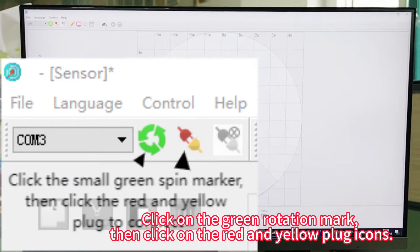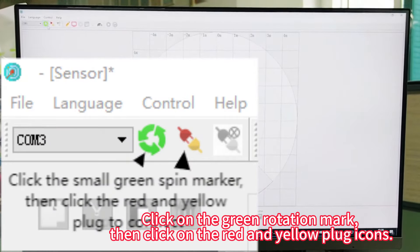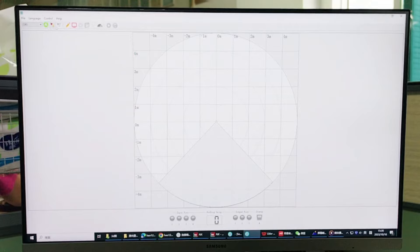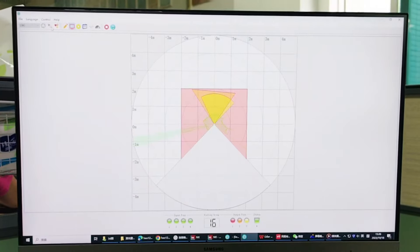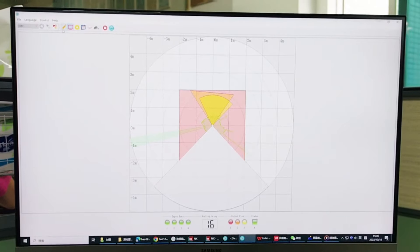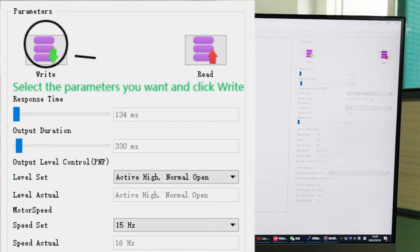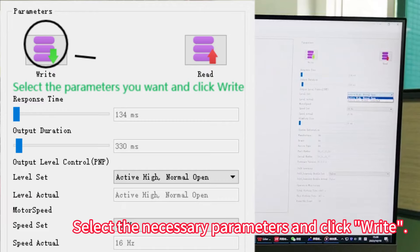Click on the green rotation mark, then click on the red and yellow plug icons. Click on the yellow gear icon. Select the necessary parameters and click right.